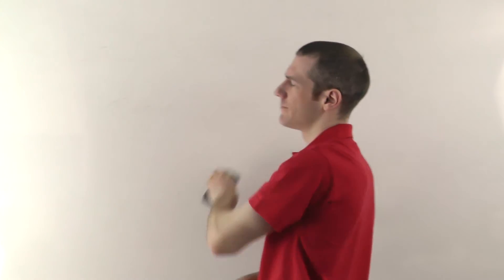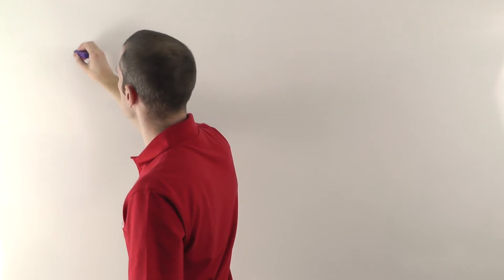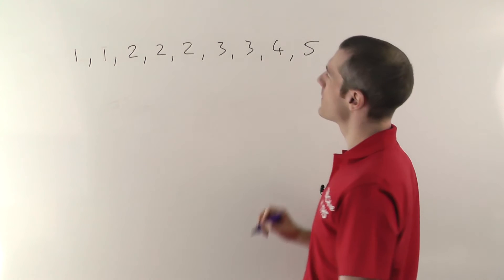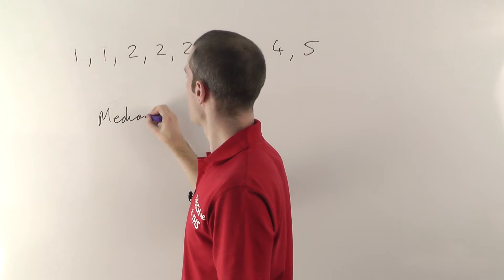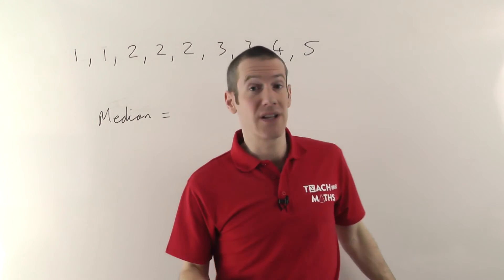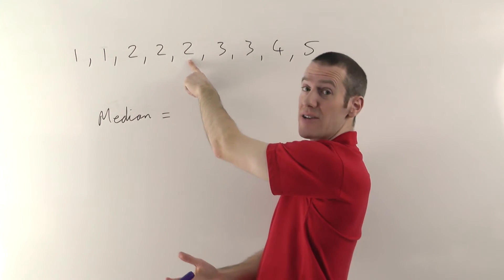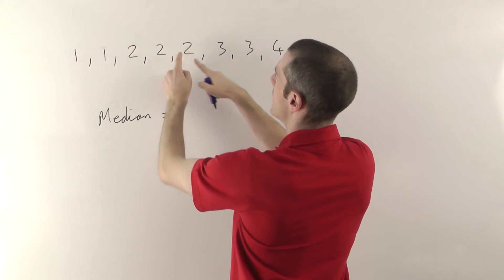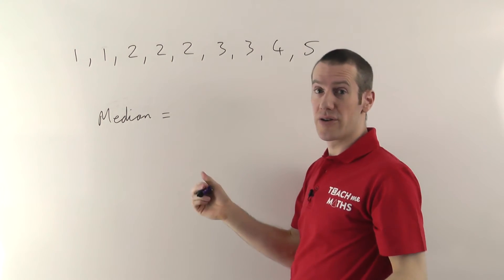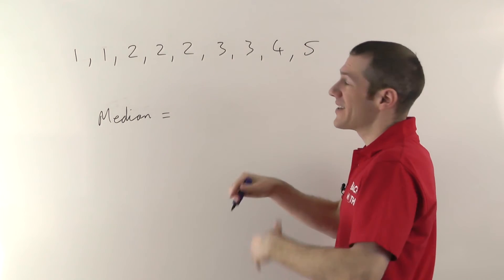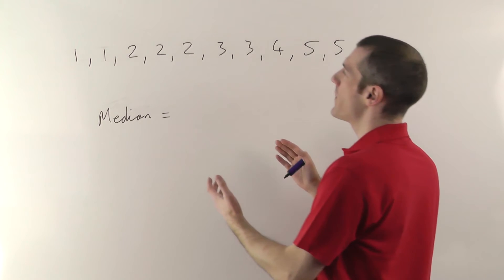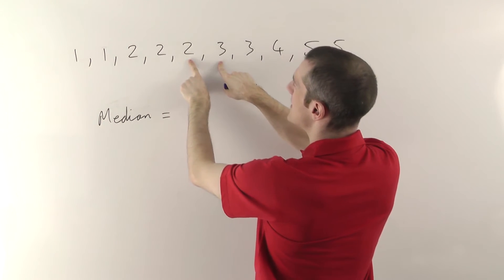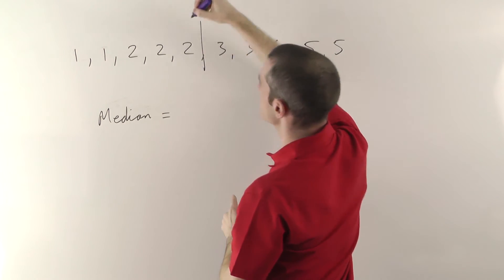Now the special cases for the median. Going back to our original set — two ones, three twos, two threes, a four and a five — we pair our way in to find the median is two. But what happens if you don't have an odd number of numbers? We ended up with one particular number because nine is odd. If I add an extra five on the end, when we pair our way in, we end up with a pair in the middle — there's no single middle number.